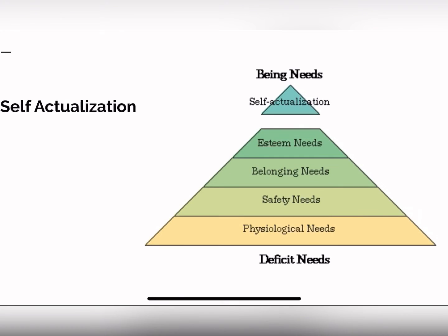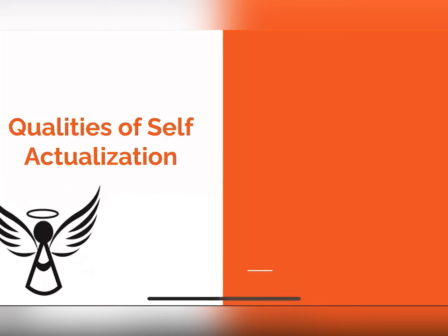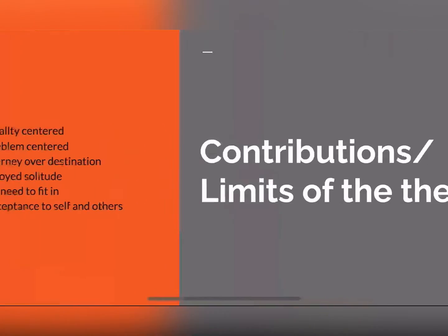This last layer is called self-actualization, and it's kind of different from our other layers. It's called being needs, or B-needs, and it doesn't need homeostasis. The goal of self-actualization is to be all that you can be. Maslow figured this out by looking at certain people throughout history who had achieved self-actualization — like Abraham Lincoln — and listed their qualities. Some of those qualities are: being reality-centered and very down-to-earth; being problem-centered, looking at the world as problems they could solve; believing in the journey over the destination; enjoying their solitude while still having close friends; not feeling the need to fit in; and accepting themselves and others.